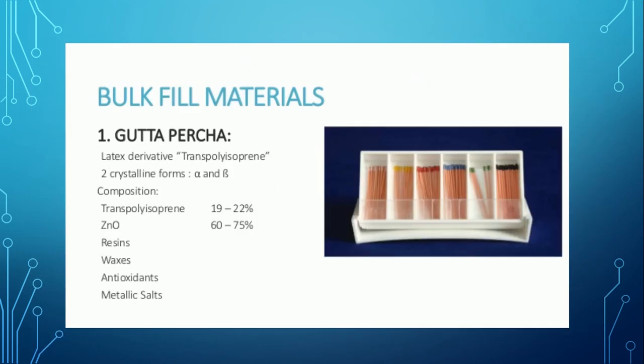Gutta-percha is a very important and most commonly used obturating material. It is a latex derivative which is trans-polyisoprene and has two crystalline forms: alpha and beta. The composition of gutta-percha is important: it is comprised of trans-polyisoprene 19 to 22 percent, zinc oxide 60 to 75 percent, resins, waxes, antioxidants, and metallic salts.